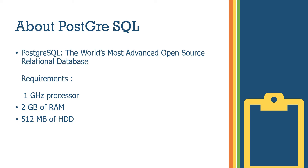PostgreSQL and SQL are RDBMS — we have data in rows and columns, nothing but tables. For download and installation requirements: 1 GHz processor, 2 GB of RAM, and 512 MB of hard disk drive.